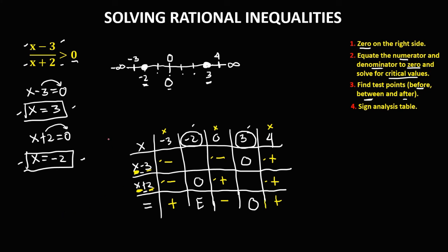In the given equation, the condition is greater than 0, and all positive numbers are greater than 0. So in the sign analysis table, just look for the positive results. We have a positive result to the left of negative 2, and also a positive result to the right of positive 3. So on the number line, the solution is to the left of negative 2 and to the right of positive 3.